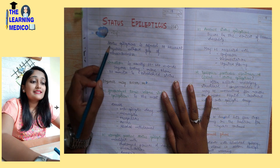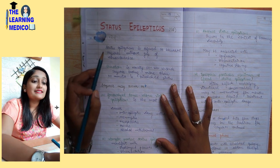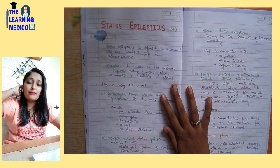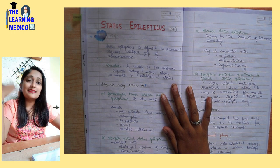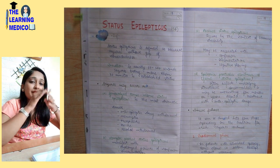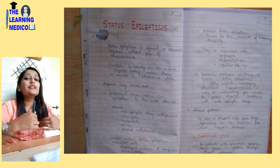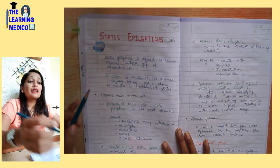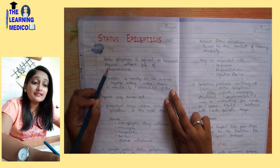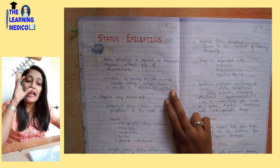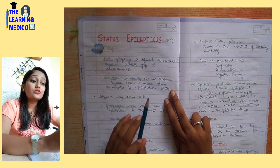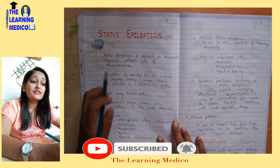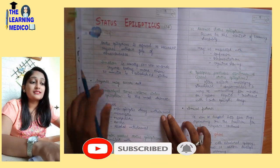First is the Definition. Status Epilepticus is defined as recurrent seizures without a gap of consciousness. It means that normally a patient has a seizure and then regains consciousness. But in Status Epilepticus, the patient has a continuous seizure with no gap. This duration is 60 to 120 seconds, and the seizure lasts more than 30 minutes, at which point it is called established status.